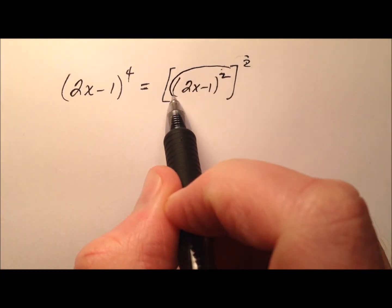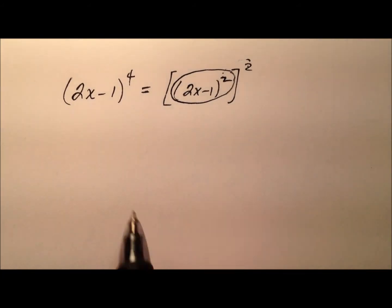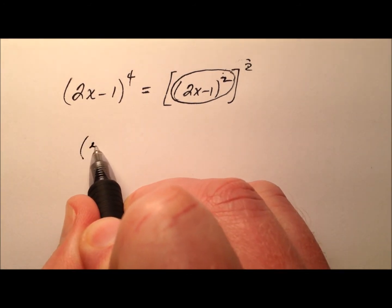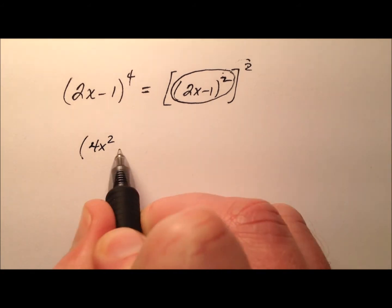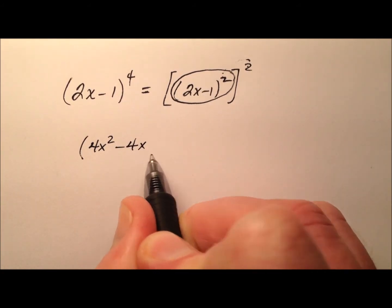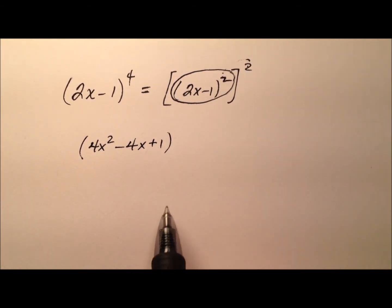Because 2x minus 1 squared is actually pretty straightforward, I'm going to square the first one, so 2x squared is 4x squared, and then minus twice the product here, so minus 4x, and then plus the square of the second one, and then that's going to be squared.